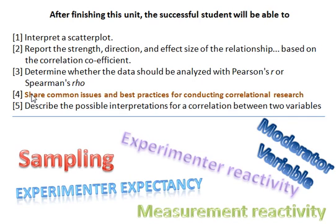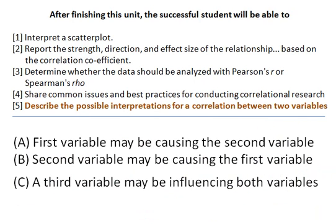Our next learning objective is to share common issues and best practices for conducting correlational research, which we'll be covering in our unit. And our last learning objective is to describe the possible interpretations for a correlation between two variables. Remember, correlation does not imply causation — there can always be a third variable accounting for the relationship between the two variables. But it is possible that one variable could be causing the effect on the other one.